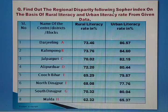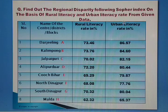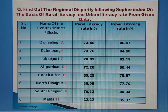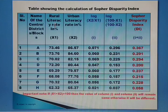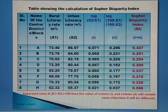The question asks us to find regional disparity according to the Sopher's Index on the basis of rural and urban literacy rates among eight districts. Moving to the next slide, you can see the columns: serial number, name of district, rural literacy rate, and urban literacy rate — these four columns are given, and we need to calculate the remaining columns.